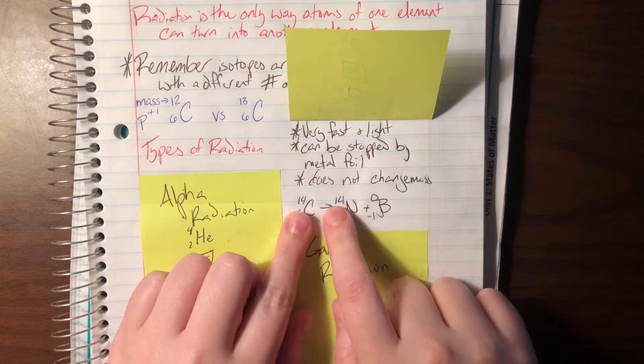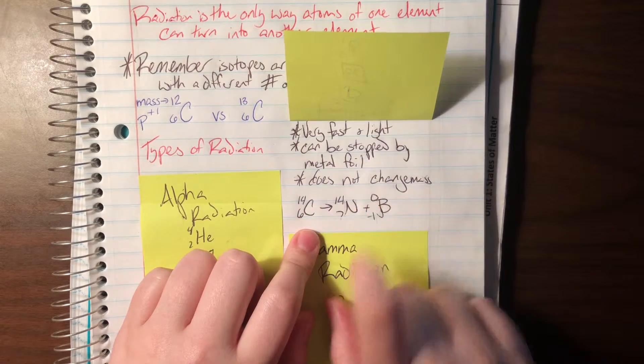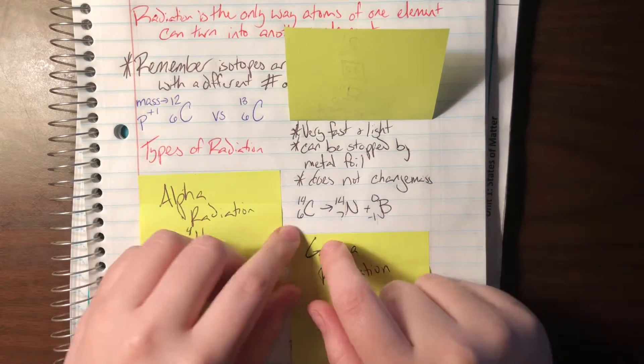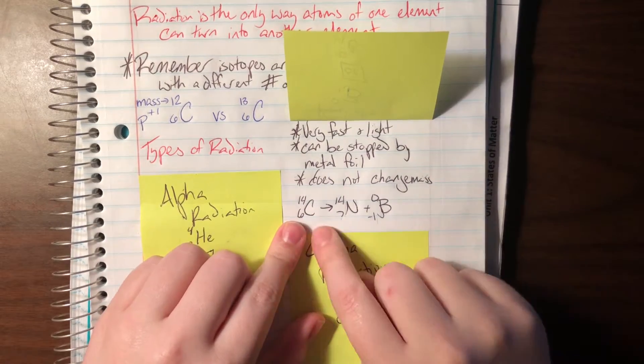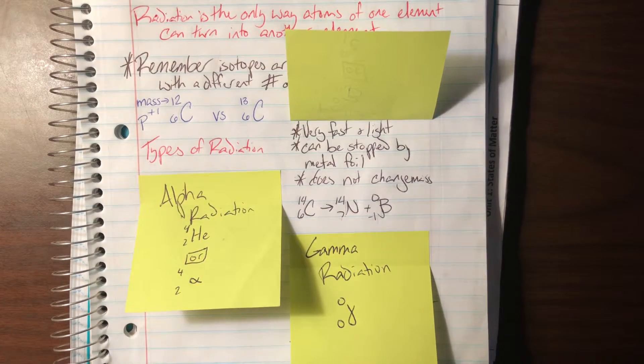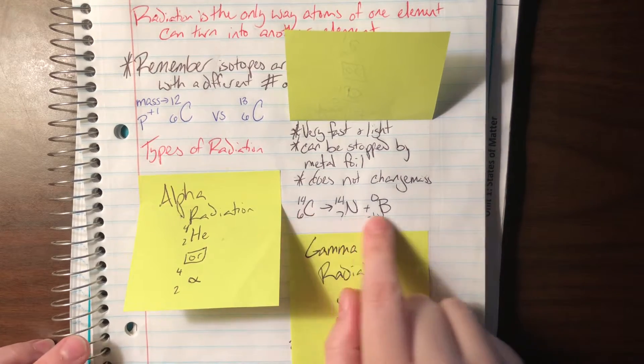And again, my total at the bottom here is going to be the same. So if I look at the top, my mass total: 14 on the left, 14 and zero means 14 on the right. For my protons, the total number for this bottom part: six is the same as seven minus one. So if you have trouble remembering what's going to happen, you're just keeping these numbers so that they have the same value on either side.